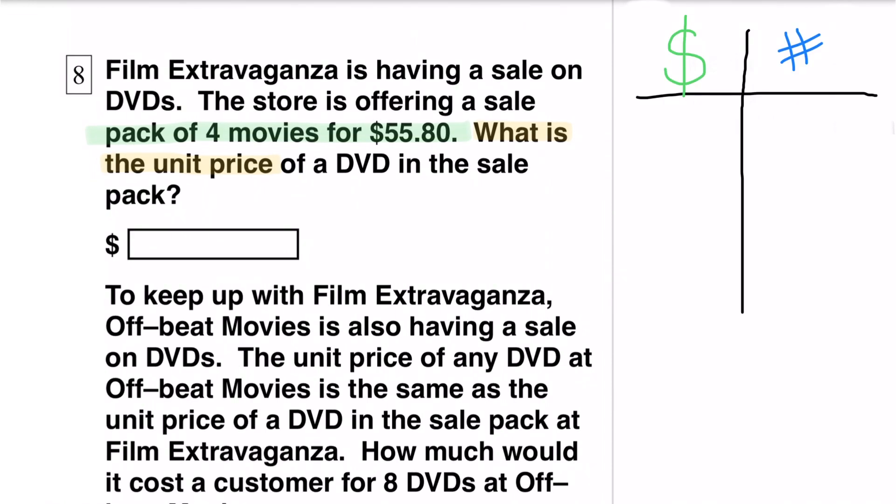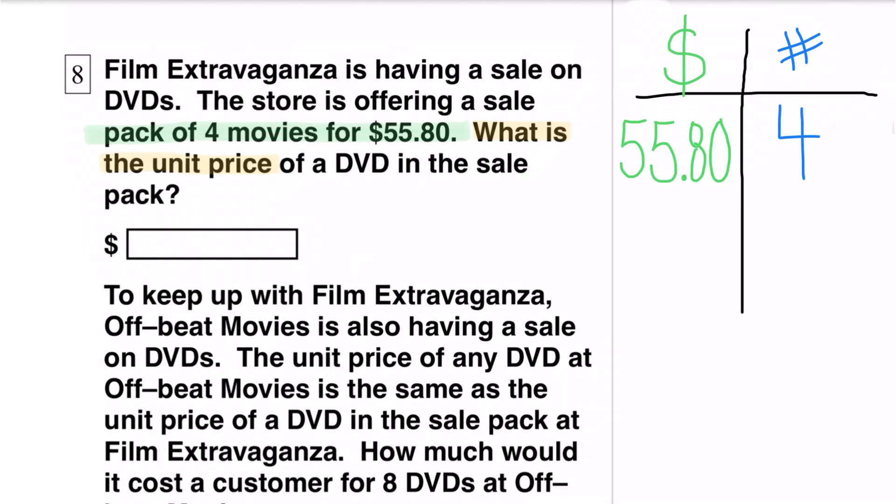I'm making a table with the dollar amount on the left-hand column and the number of DVDs on the right-hand column. The information tells us that you can get 4 DVDs for $55.80.